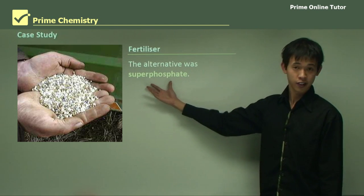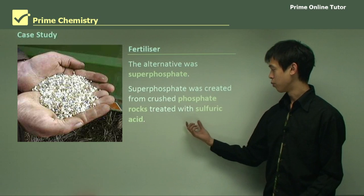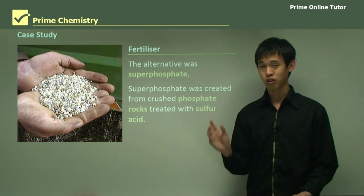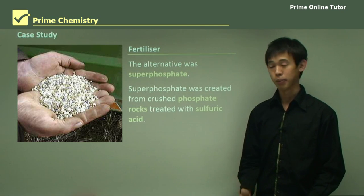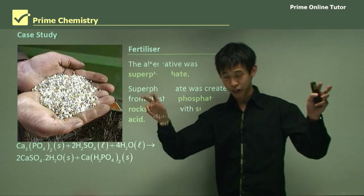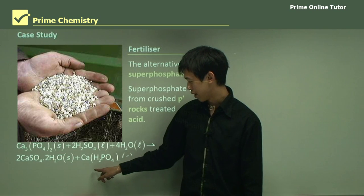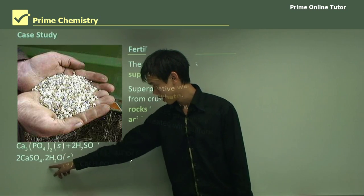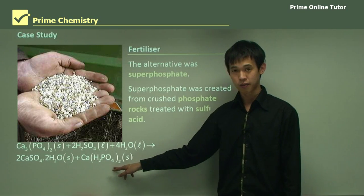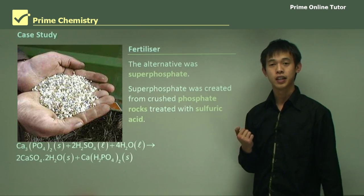The alternative was superphosphate, created by crushing phosphate rocks with sulfuric acid. Later in this option we'll learn how sulfuric acid is produced. Here is the reaction: calcium phosphate (our phosphate rock) reacts with sulfuric acid and water to produce calcium sulfate with water, as well as the superphosphate — calcium hydrogen phosphate. This calcium hydrogen phosphate is our fertilizer, and that's how we produce superphosphate fertilizer.